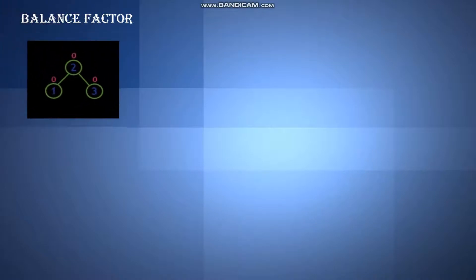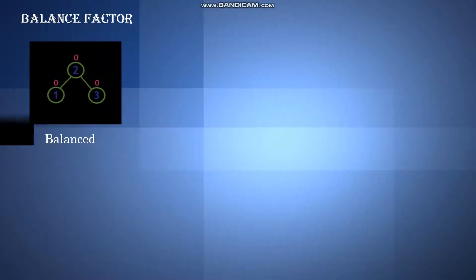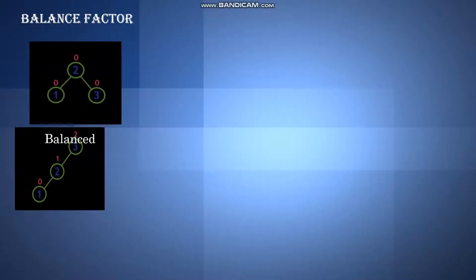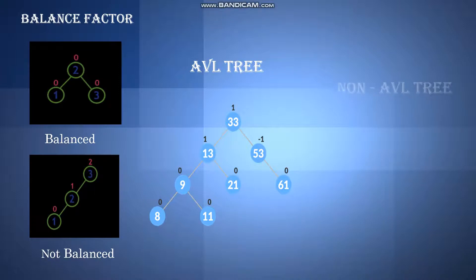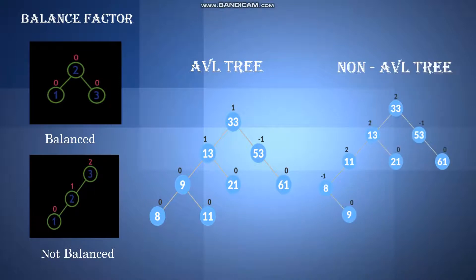Now we know what the balance factor is. In this case, the balance factor of each node is 0, so it is considered to be balanced. Whereas in this case, the balance factor of node 3 is 2, so it is not balanced. Let's see an example for an AVL and non-AVL tree. In an AVL tree, the balance factor is balanced, whereas in a non-AVL tree, the balance factor is not balanced, so it is considered to be a non-AVL tree.